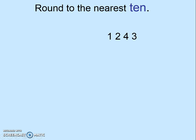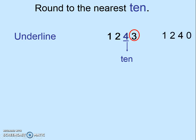One final example of rounding to the nearest 10. Underline the digit in the tens place. Circle the number to the right. 3 is a small number, so the digit in the tens place stays the same, and the numbers to the left of the tens place stays the same.